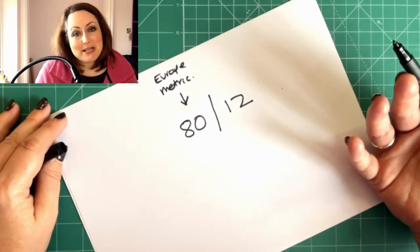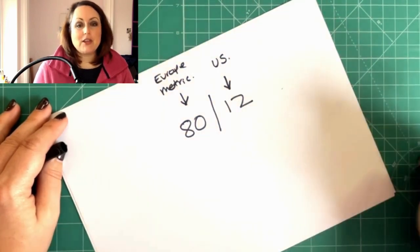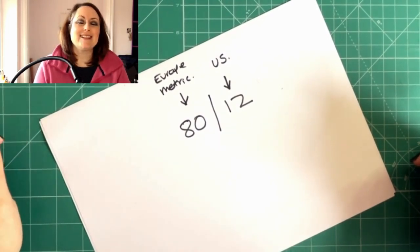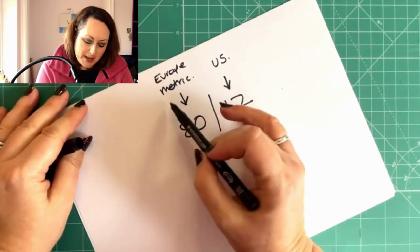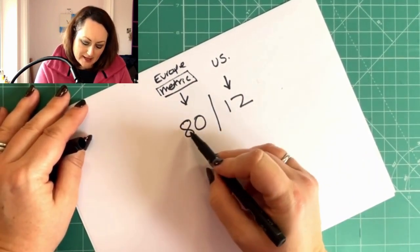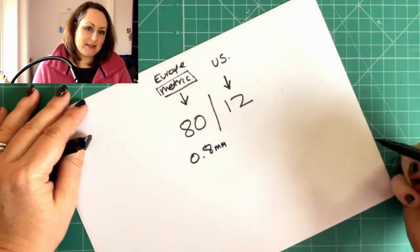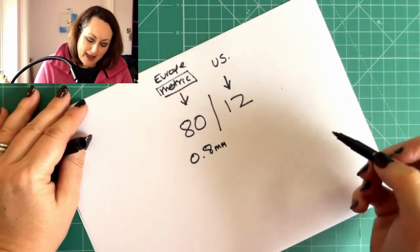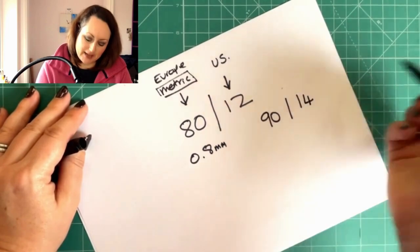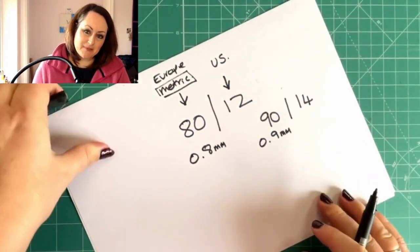Don't worry, I'm not getting too detailed. This one here is used by the US market, the States market. So hello to everybody watching in the States. So it's two numbering systems. But if we take the metric one for the moment, what that means is that the size of needle is 0.8 millimeters. So if we had a 90 needle, let's just say a 90 slash 14, this metric would be 0.9 millimeters.